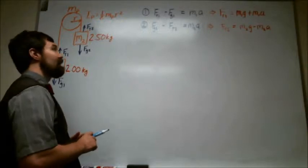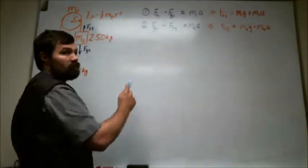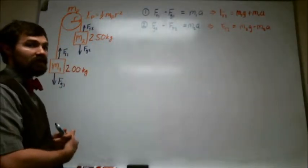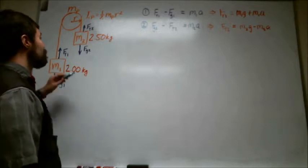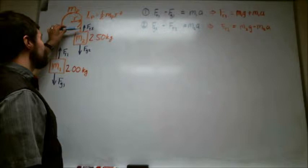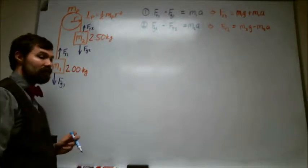Then I have a second equation which goes with the second mass, which is the mass on the right hand side of the pulley, and again the two forces acting on this are the weight going down and the force of tension from the string going up.